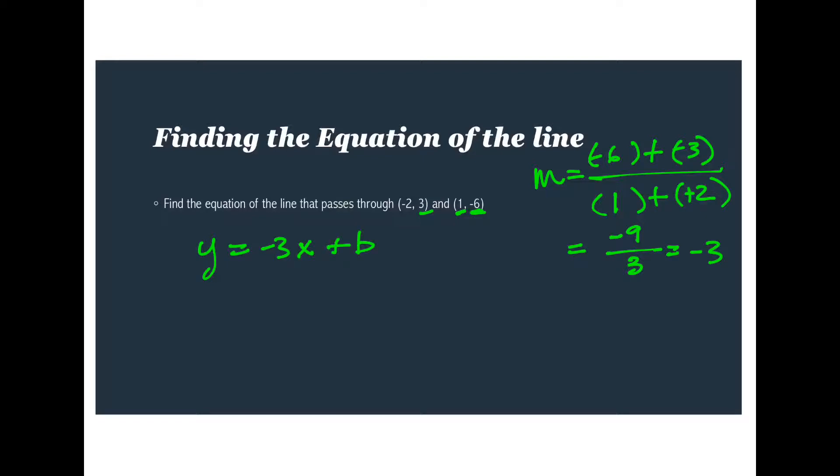And now we have to figure out what b is. Using one of these points, let's plug in three for my y. And then we'll plug in negative two for my x. So this gives me six. We'll go through over here solving this for b. We'll get b is equal to negative three.